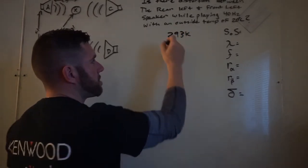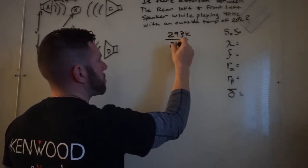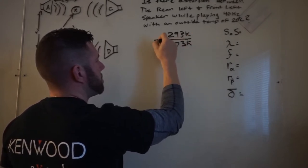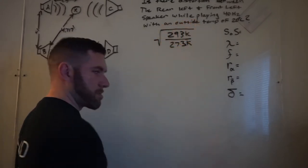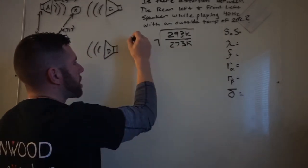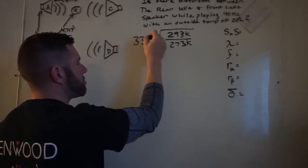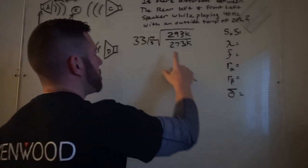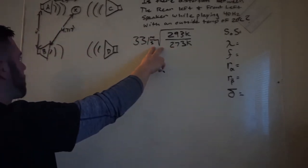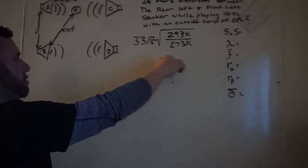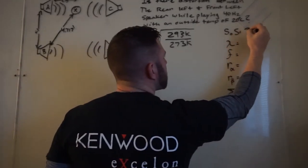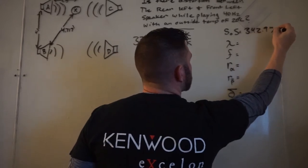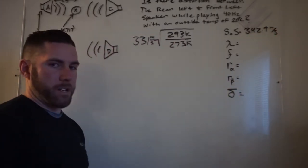And to find out what the speed of sound is, we put that over the temp at zero. So 273 is what it will always be. And then the speed of sound at zero, which is 331 meters per second. And when you get done doing this math, you will have the speed of sound at a given temperature. 342.9.